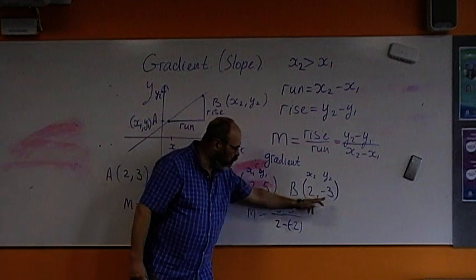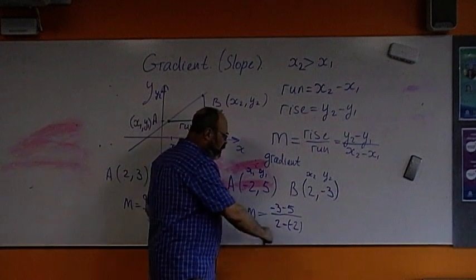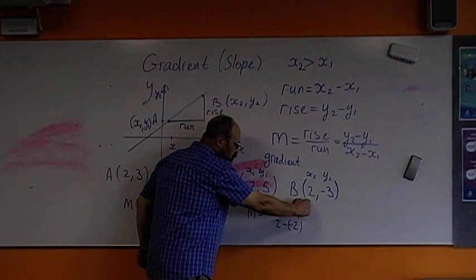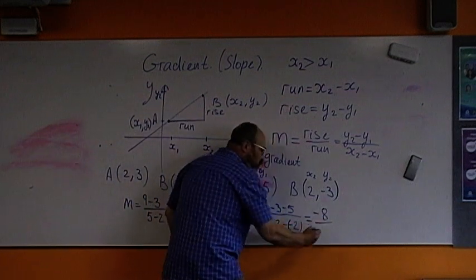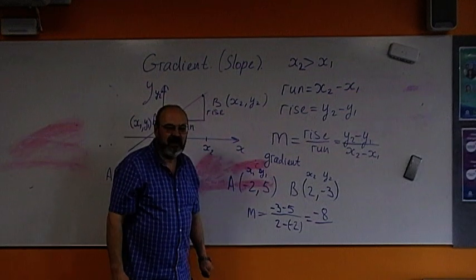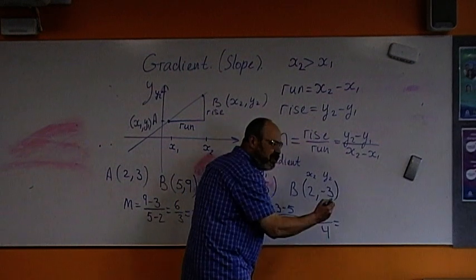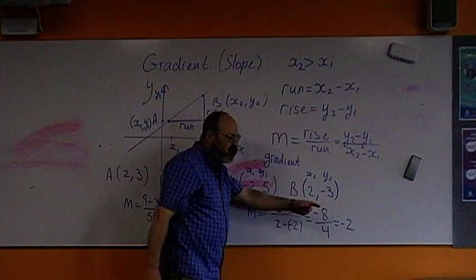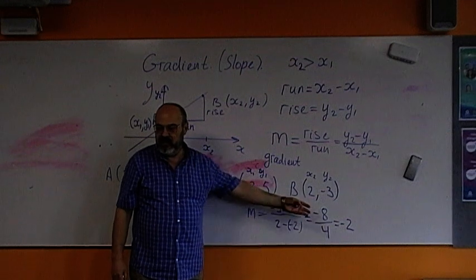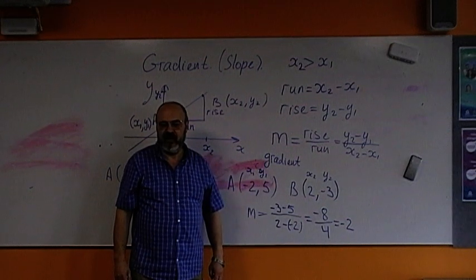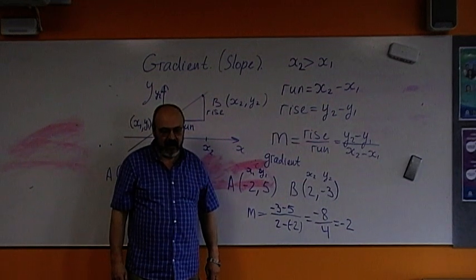And here we have x2 minus x1 equals negative eight divided by what is two minus minus two? Four. And negative eight divided by four equals negative two. So, we get gradient can be negative. Gradient can be negative. We have negative two. Make sense how to find gradient?